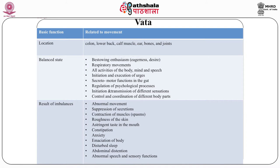In short, Vata controls the respiratory, circulatory, lymphatic, excretory and reproductive systems as well as all types of bodily movements. All functions of the central, peripheral and autonomic nervous system are represented through Vata in Ayurveda. Imbalance of Vata results in abnormal movements, suppression of secretions, contraction of muscles, dyspasm, roughness of the skin, astringent taste in the mouth, constipation, anxiety, emaciation of the body, disturbed sleep, abdominal distension, and abnormal speech and sensory functions.